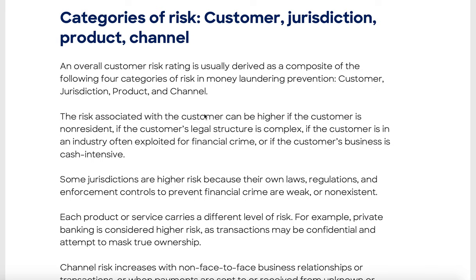Risk can be higher if the customer is a non-resident — they can just leave, or there are tax issues. If the legal structure is complex, involving secrecy havens, it becomes very hard for organizations like the IRS or Australia's ATO to investigate. People involved in financial crime can pay for top lawyers, making these structures just too complex to unravel — that's how they get ahead.